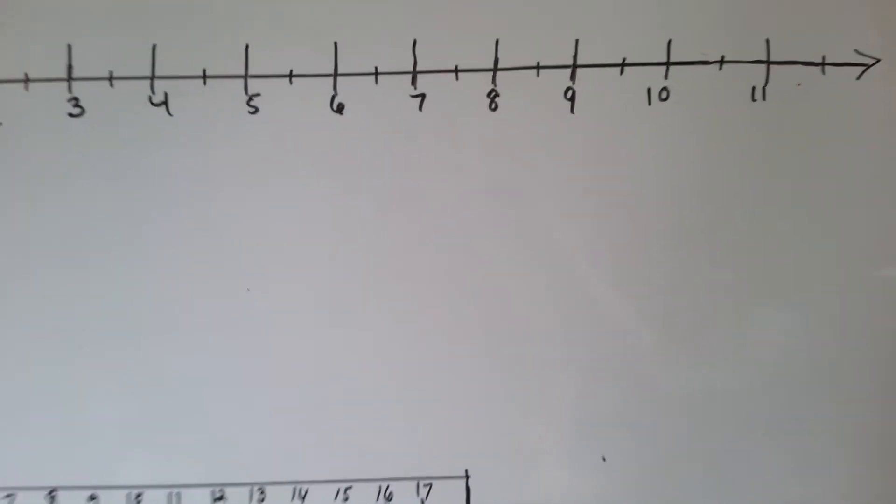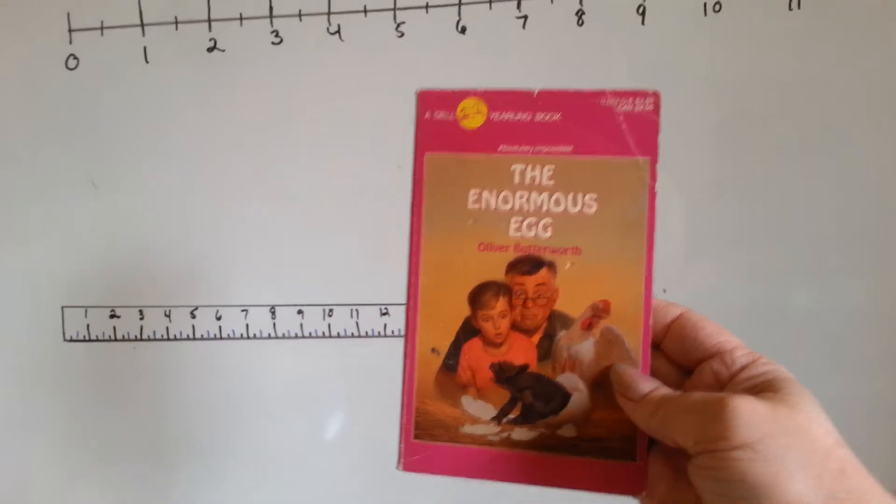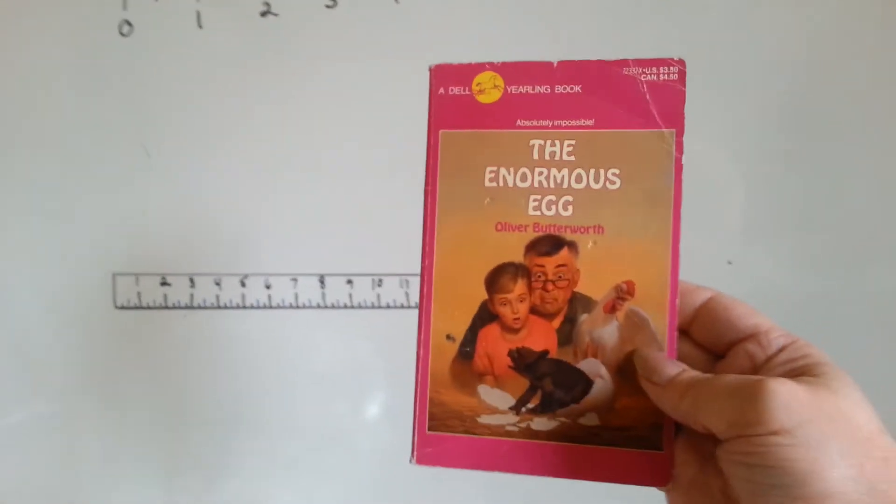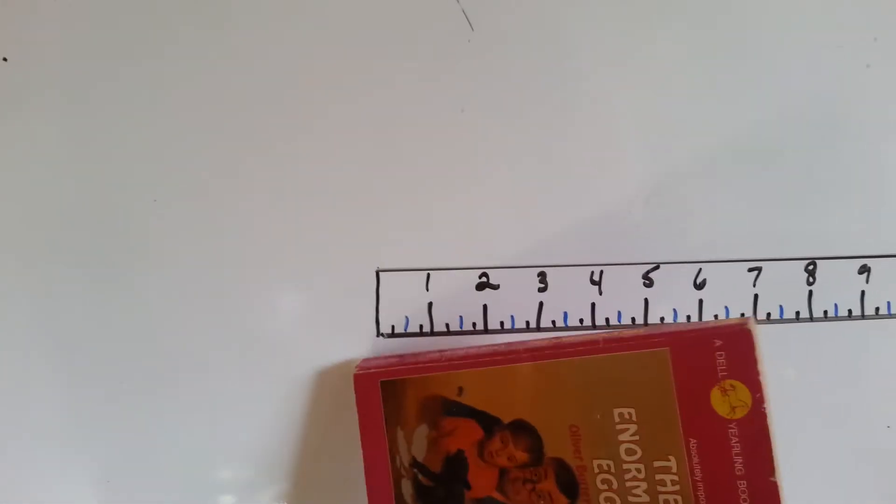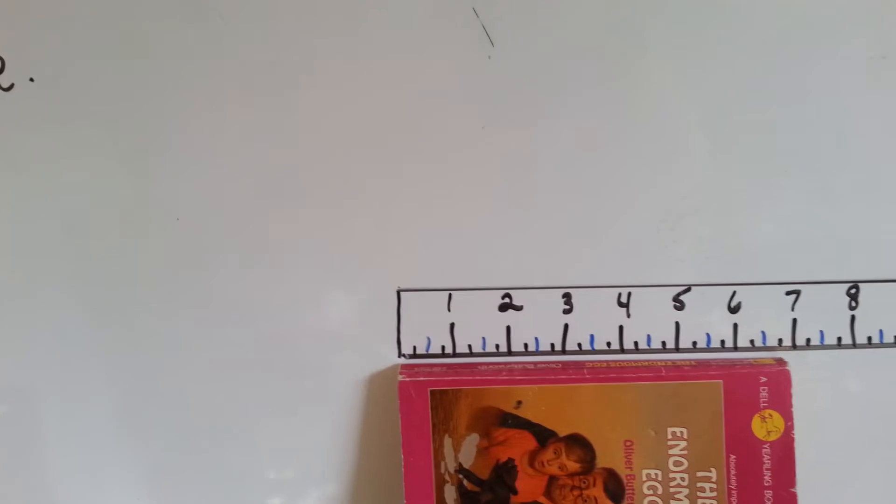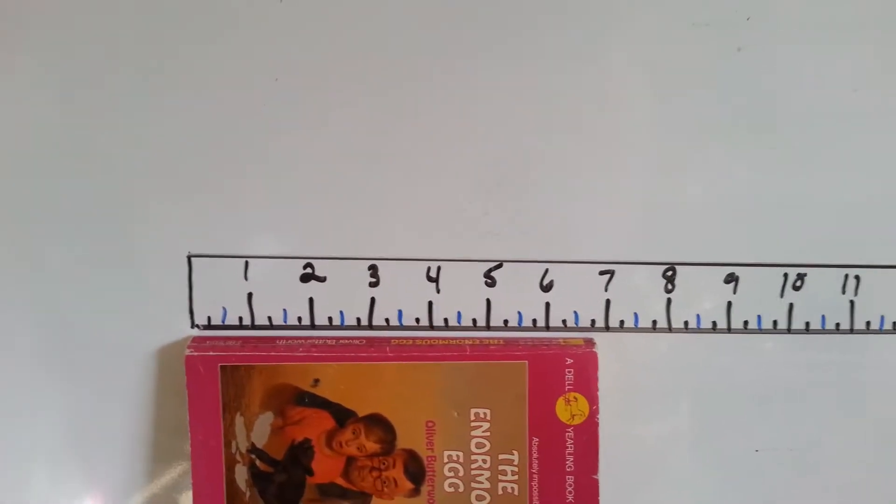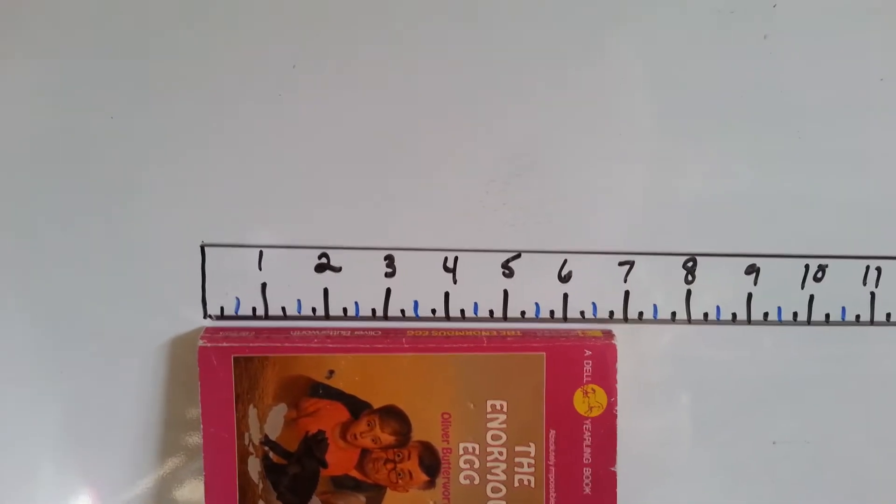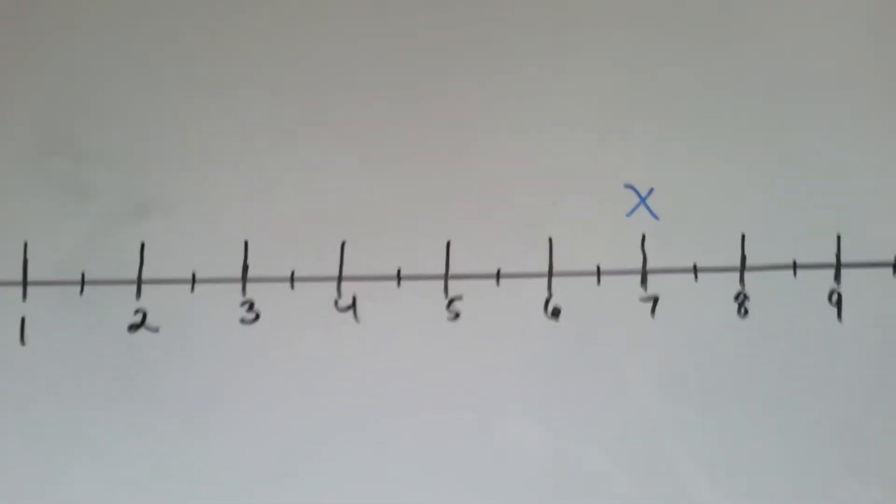Alright, let's get our first book and measure it. The first book I've got is The Enormous Egg by Oliver Butterworth. Very cute story. Let's measure how tall it is. We're going to line it up over here on this corner, and we're going to measure it to the nearest half inch. Would you say it's closer to six and a half or to seven? I think it's closer to seven. So, we'll call this a seven. We'll put it in our pile, and we're going to put an x for seven on our line plot.